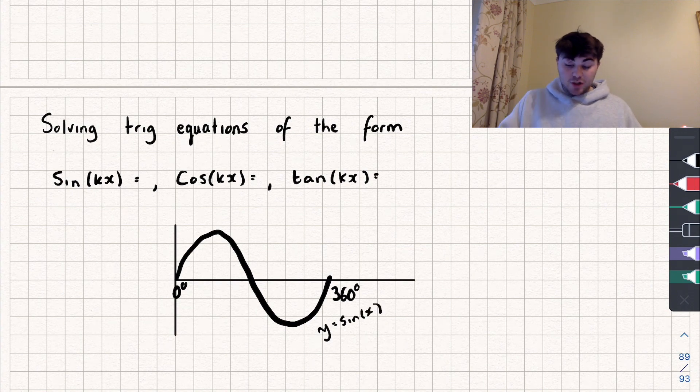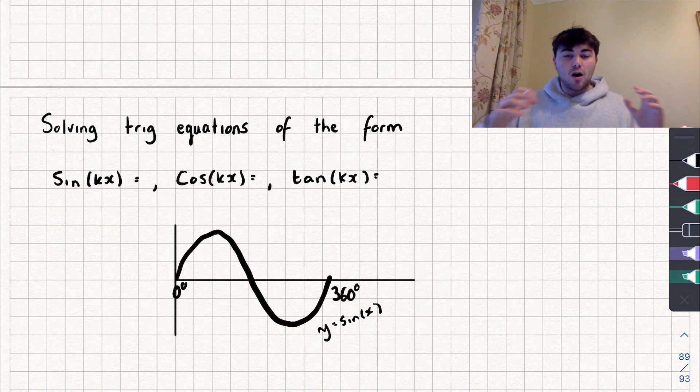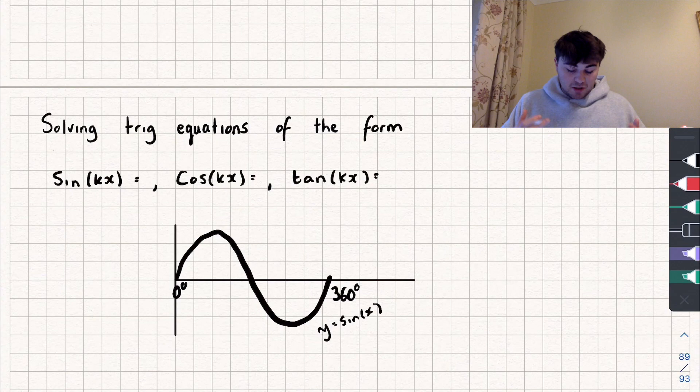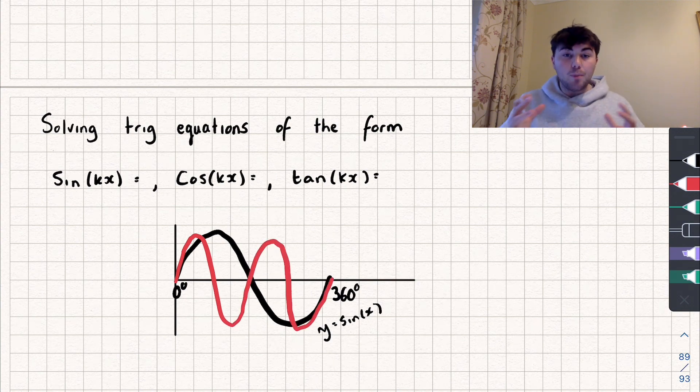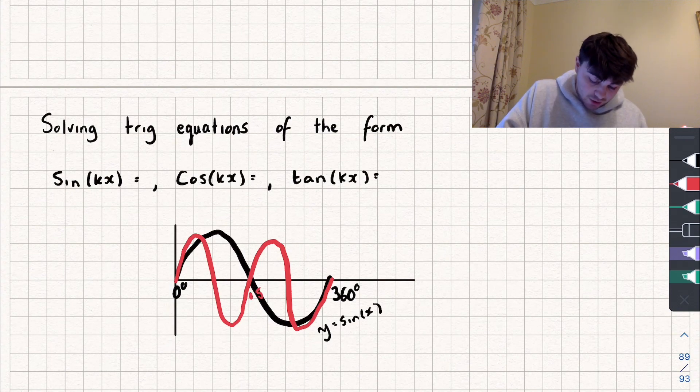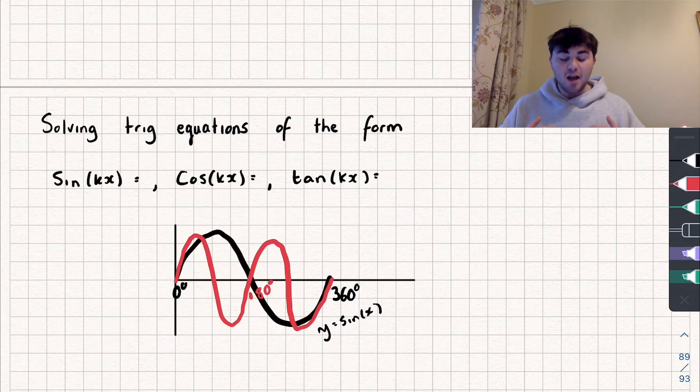Now if I was to sketch on here sine of 2x, well this is squashing the graph, so it's twice as compact, it's twice as small. And so by doing this, we can fit twice the period of the graph into this range. So it's going to look something like this instead. And so you can see we fit a whole period of the graph now in 180 degrees rather than 360. So it's squished it, so it's twice as compact, and that's kind of useful to know when we're looking at these questions.